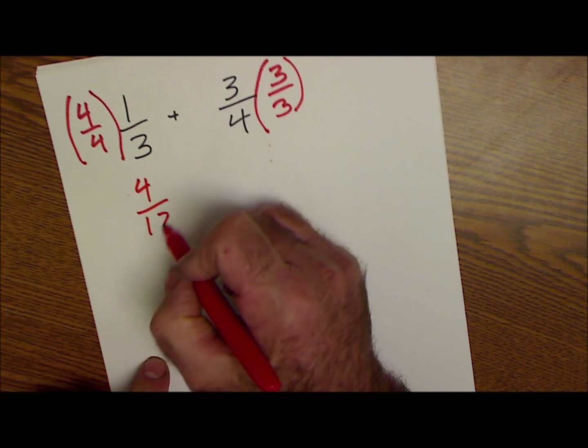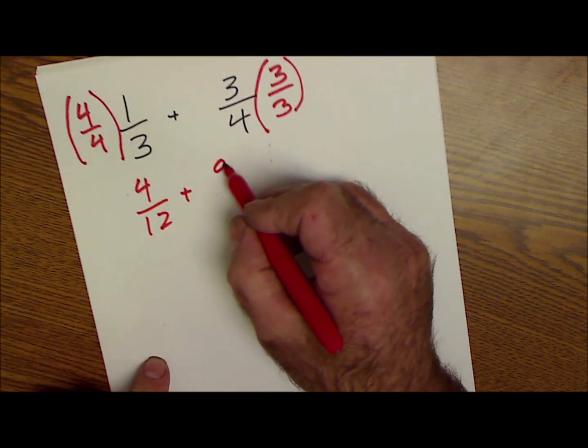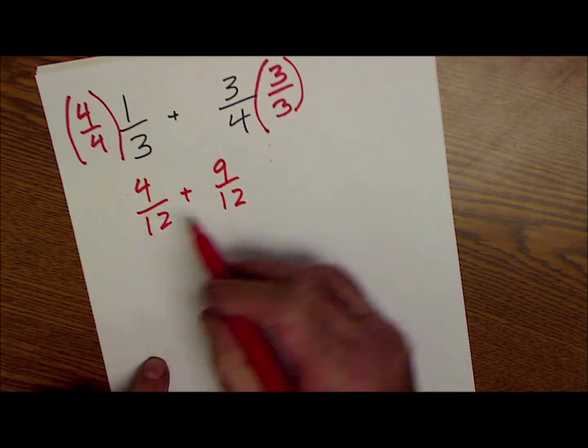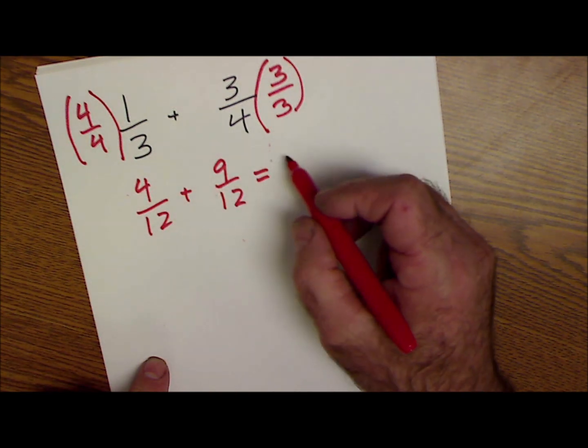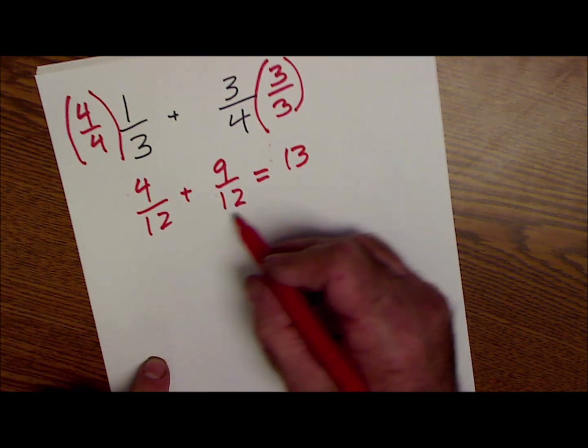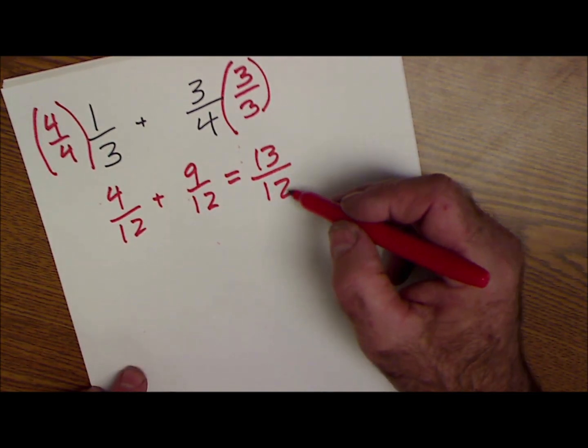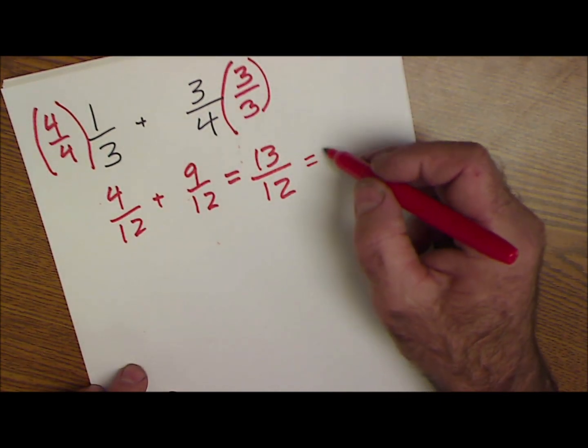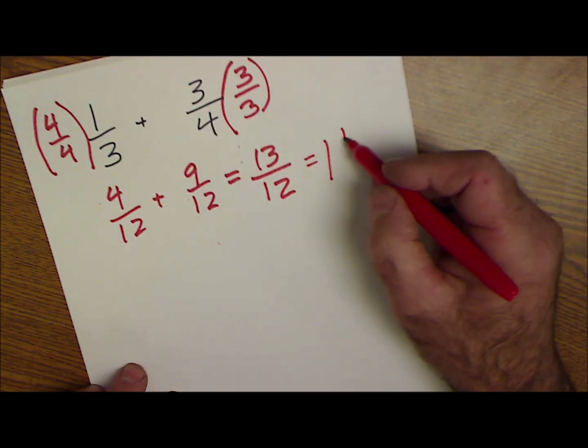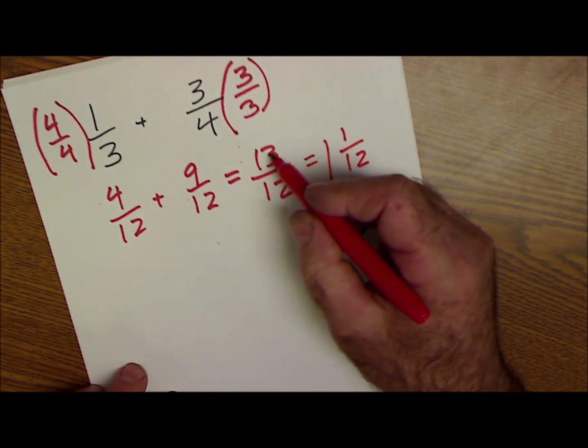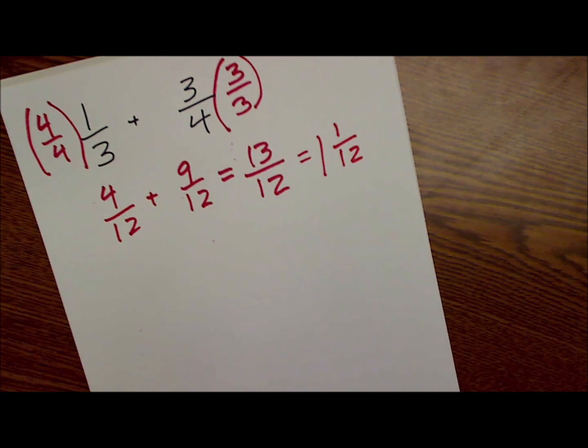So I have four-twelfths plus nine-twelfths. Add across the top, four and nine is 13, over that common denominator of 12. This is called an improper fraction. 12 goes into 13 one time with one left over. So 13-twelfths is the same thing as one and one-twelfth.